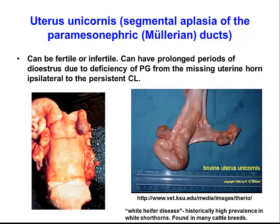Uterus unicornis involves segmental aplasia of the paramesonephric duct, where part of the duct fails to fully develop and regresses. This condition can be inherited — historically it was found at high prevalence in white Shorthorn cattle, known as white heifer disease, but is also found in other breeds. The animals can cycle and can deliver a fetus if pregnant in the unaffected horn. We recommend culling affected animals due to the genetic association with this abnormality.